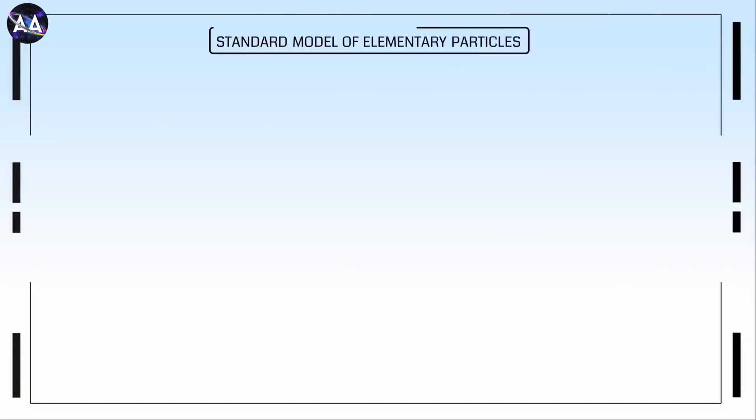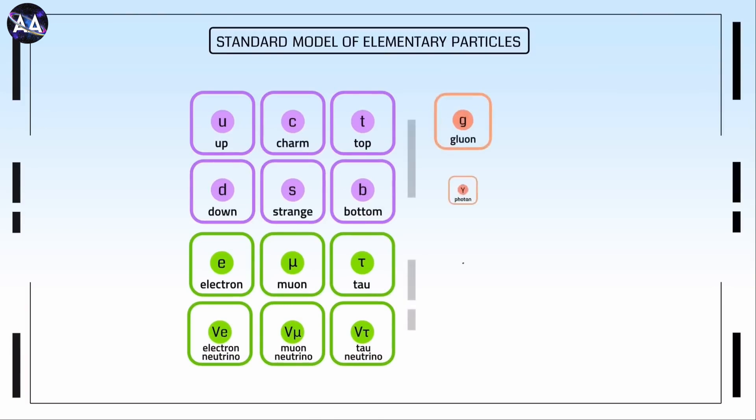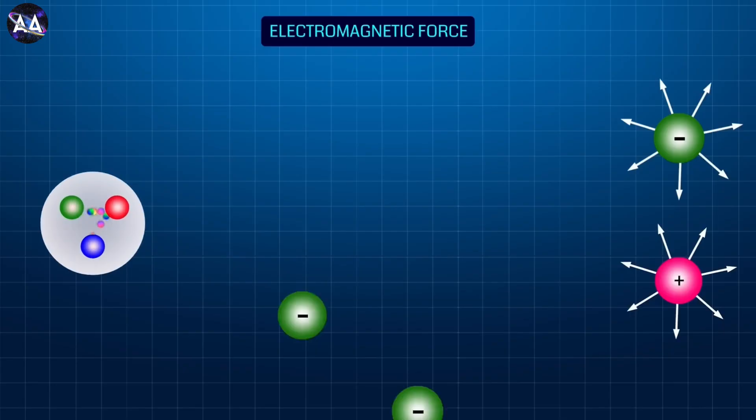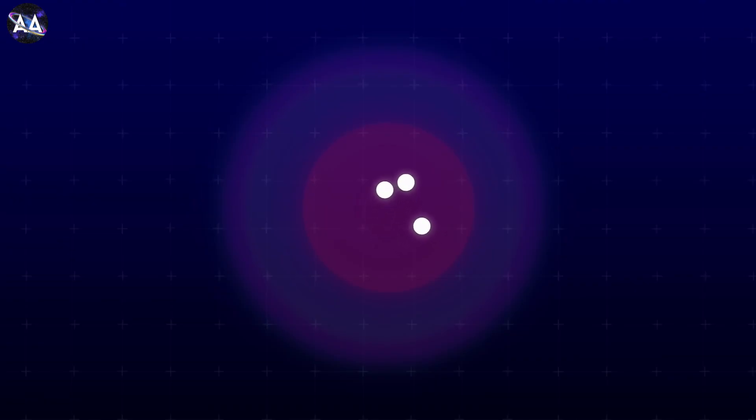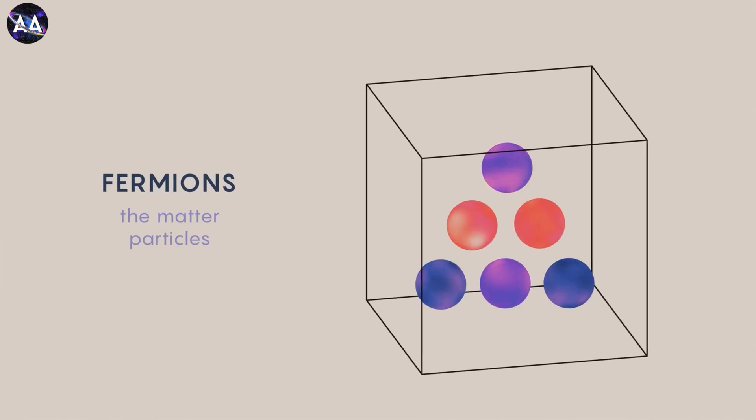One of the most important achievements in particle physics is the development of the standard model. This is like a cheat sheet for the universe. It lists all the known elementary particles and the forces they interact with. The standard model includes matter particles, fermions.